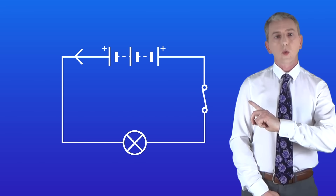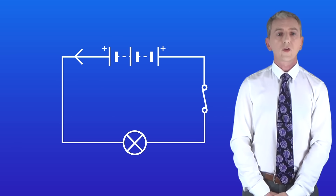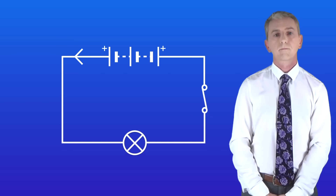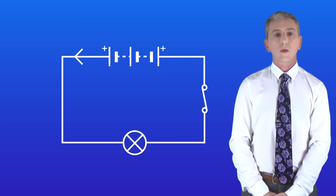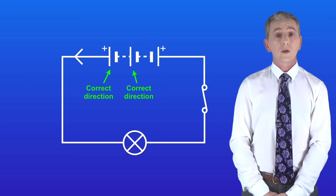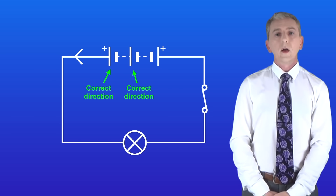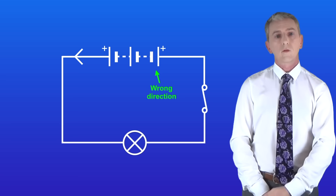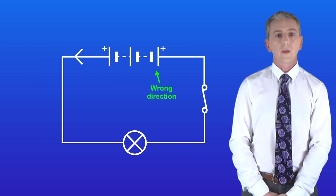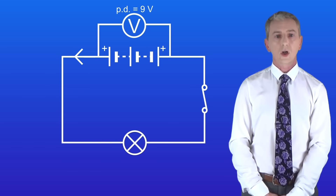Here's the final question. Each cell has a potential difference of nine volts — determine the overall potential difference of this battery. In this battery we've got three cells: two of them are pointing in the correct direction, giving a potential difference of two times nine volts, which is 18 volts. However, one cell is pointing in the wrong direction, which cancels out one of the other cells. So the overall potential difference of this battery is nine volts in total.